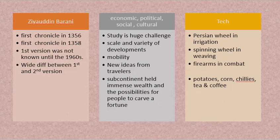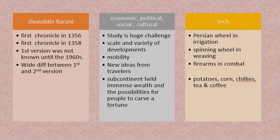Travelers coming to the Indian subcontinent from different parts of the world also brought new foods — seeds of potatoes, corn, and chillies, which were unknown to India before 1700. They also brought tea and coffee, plantation crops. A lot of tea and coffee is now exported from India to the world, but before this period, India never had them. Because of changes in economics, politics, social and cultural behavior, and the availability of innovations like the Persian wheel, spinning wheel, and firearms, the lifestyle changed.